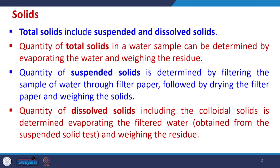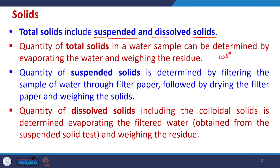Total solids is one of the important parameters evaluated for any water sample. Total solids includes suspended solids as well as dissolved solids. The quantity of total solids in a water sample can be determined by evaporating the water and weighing the residue. This is a very simple technique — evaporation takes place at 105 degrees centigrade — and from the residue we can find out the total solids.